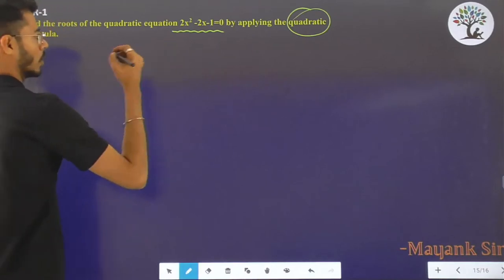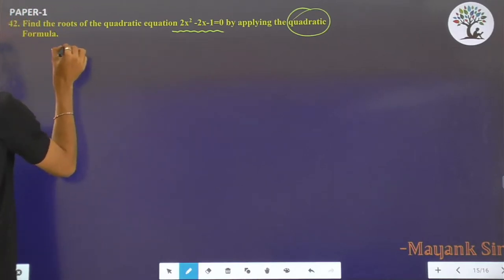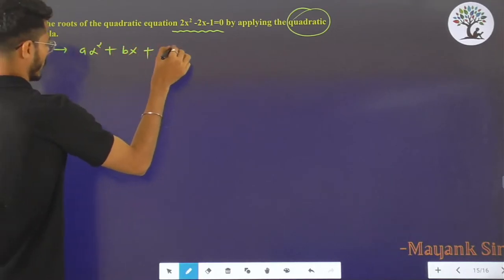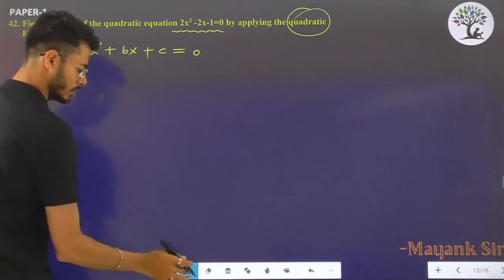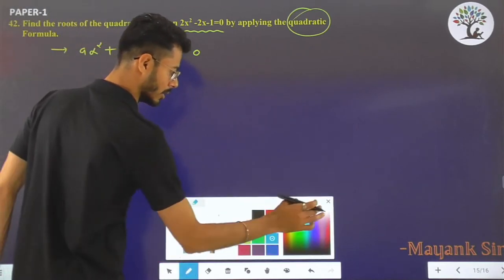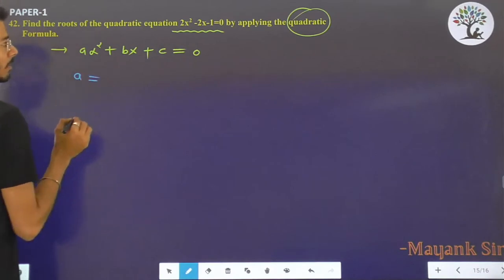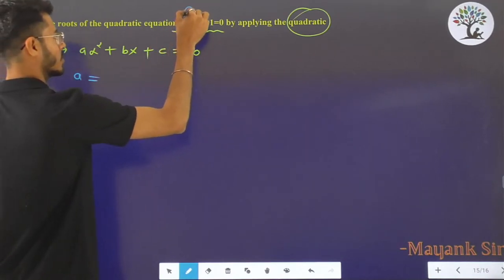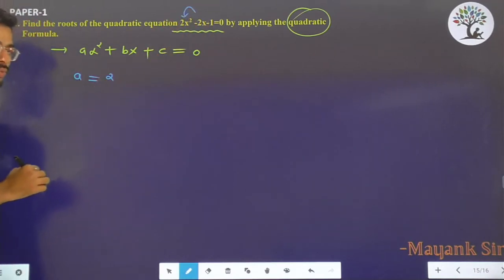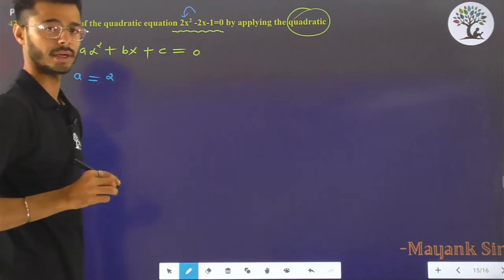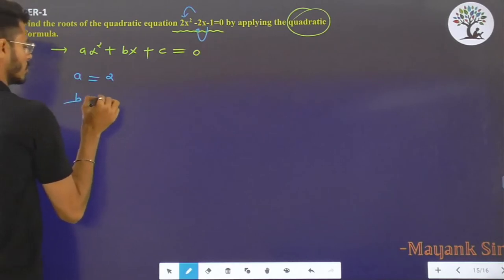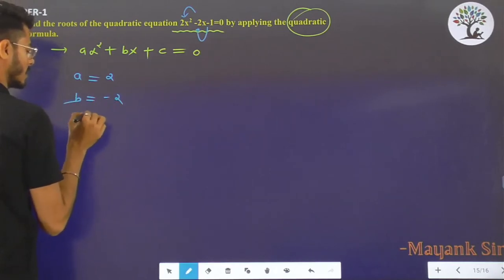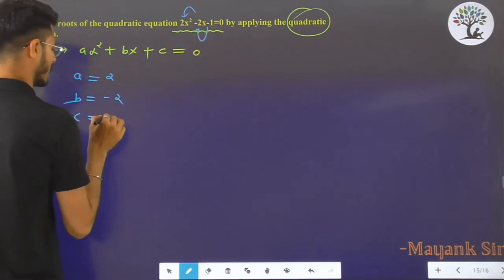First of all, correlate this equation with the standard equation of a quadratic equation, that is ax² + bx + c = 0. The value of a, the coefficient of x², is +2. The coefficient of x, that is b, is -2. And c, the constant, is -1 in this case. So, values of a, b, and c.